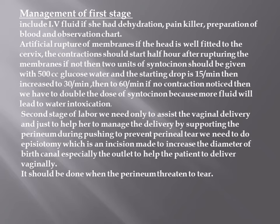The second stage of labor begins at full cervical dilatation. We need to assist the patient in bearing down safely. It is necessary to support the perineum during pushing to prevent perineal tearing. We need to do an episiotomy — an incision made to increase the diameter of the birth canal, especially the outlet, to help the patient deliver vaginally — and it should be done when the perineum is threatened to tear.